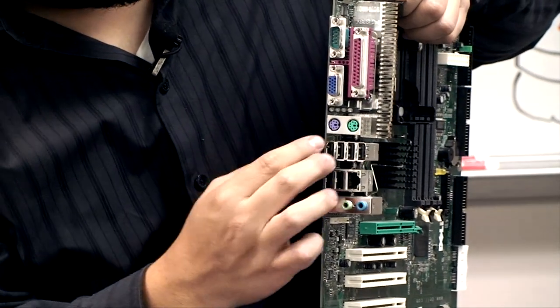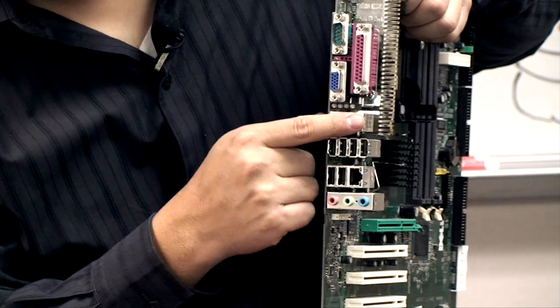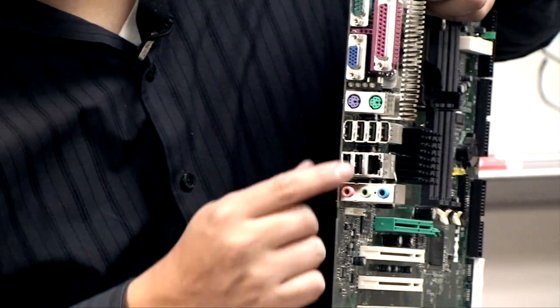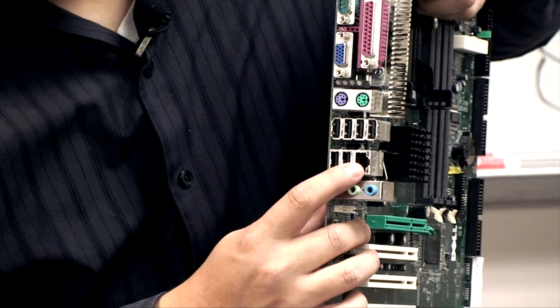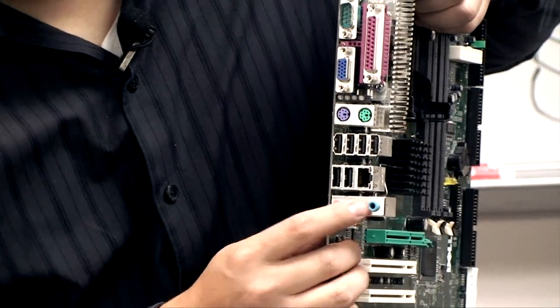To go through them real quickly, you've got parallel ports (printer ports), serial port, video port, mouse and keyboard - they're called PS2, these round ones are called PS2 ports, USB, a NIC (network interface card), and then audio ports.